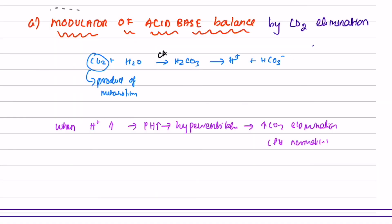The lung also acts as a modulator of acid-base balance by CO2 elimination. CO2, which is the product of metabolism, combines with water and in presence of carbonic anhydrase enzyme forms carbonic acid. The carbonic acid then forms H+ and bicarbonate ions. When H+ increases or when the pH is low, the lung starts hyperventilating, resulting in CO2 elimination and the pH gets normalized.